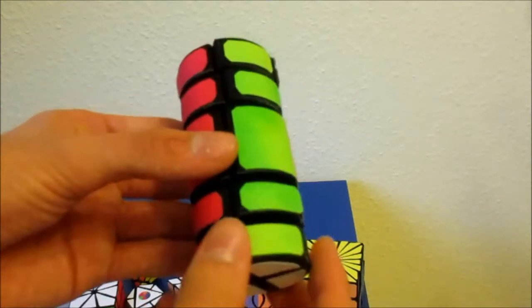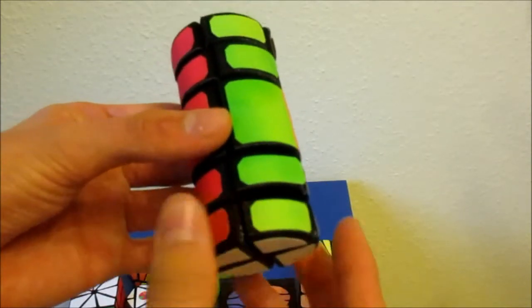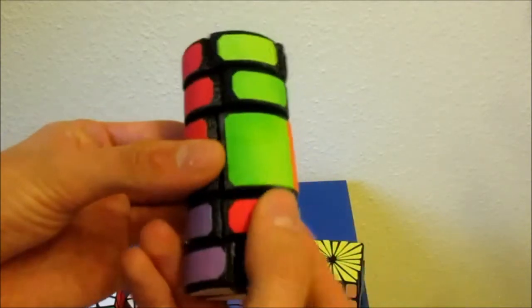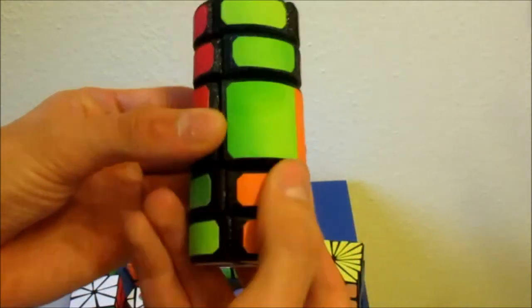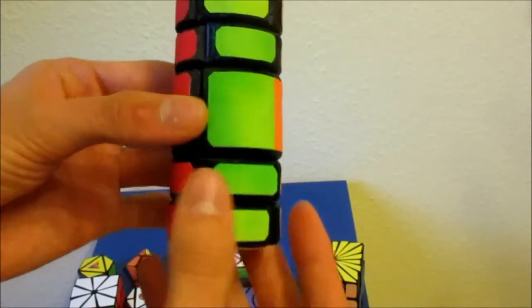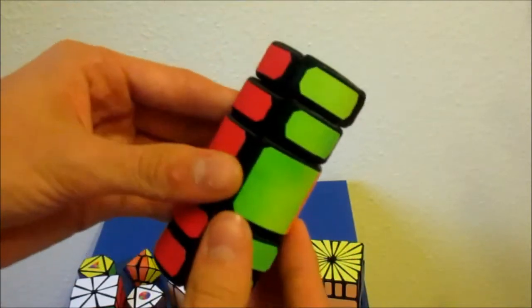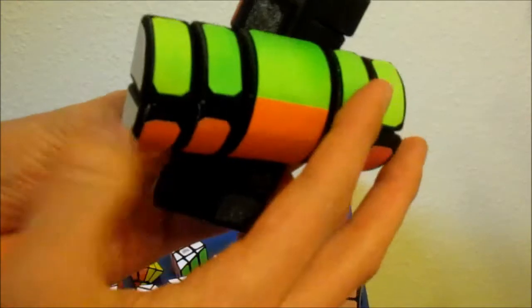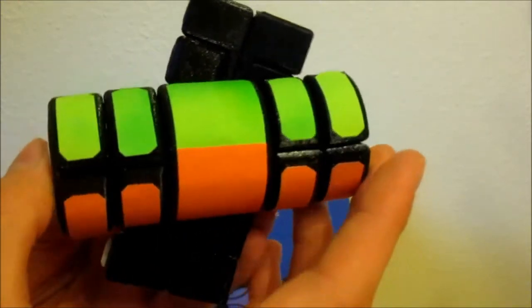For this puzzle I used a similar mechanism to what I have been using on my 1x2x5 puzzle. Basically the outer layers are connected to the puzzle core through long stalks. That made the whole puzzle quite risky and I was afraid of it breaking.